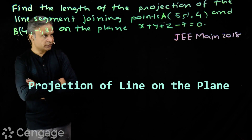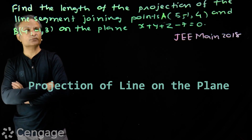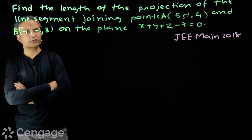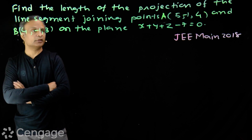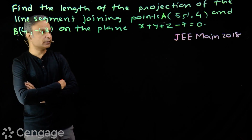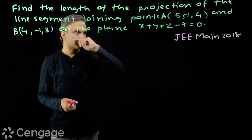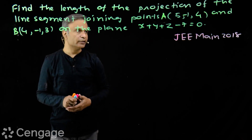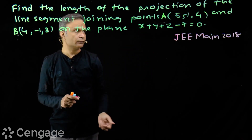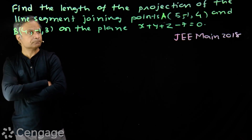We have this question from the JEE Main exam. We have to find the length of the projection of the line segment joining points A and B on the plane having this equation. Coordinates of point A are (5, -1, 4) and coordinates of point B are (4, -1, 3).